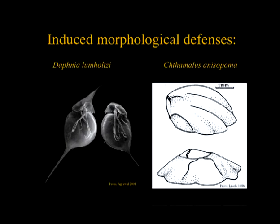There's a defended morph and an undefended morph. One thing to bear in mind with these induced defenses is that there's always some sort of a tradeoff. When an organism is defended, it's usually at some cost — otherwise, these organisms would perpetually be expressing that defended morphology. In the case of the cladoceran, they have reduced swimming ability. In the case of the barnacle, the bent morphology means reduced space for reproductive organs and lower reproductive output.